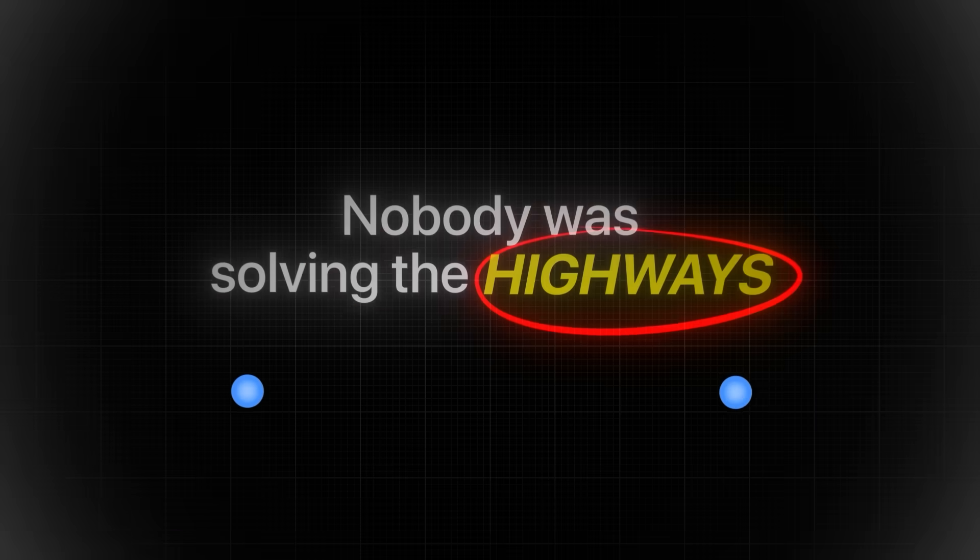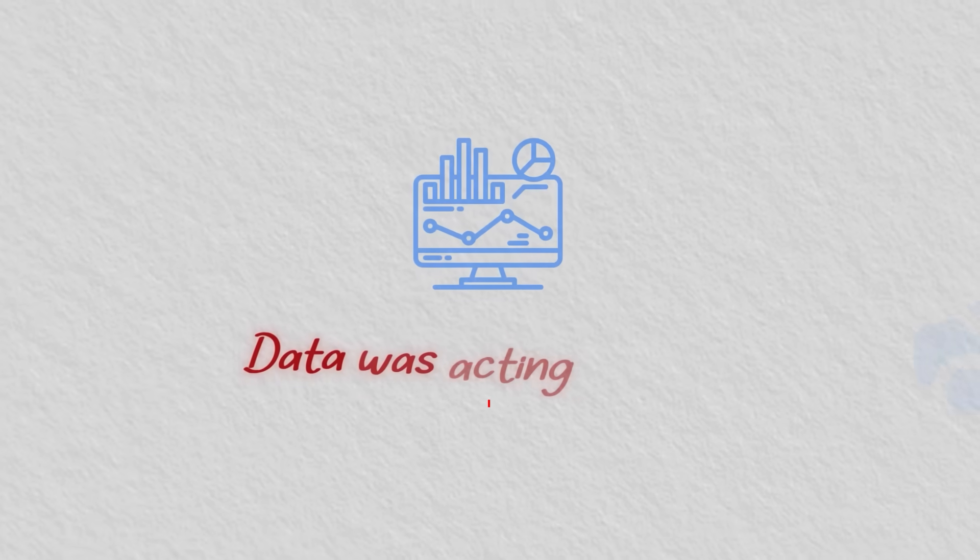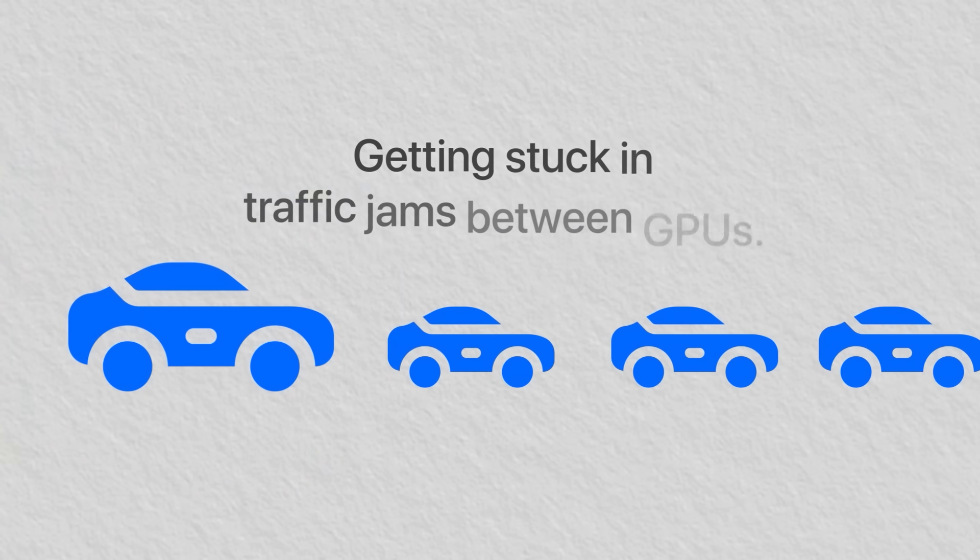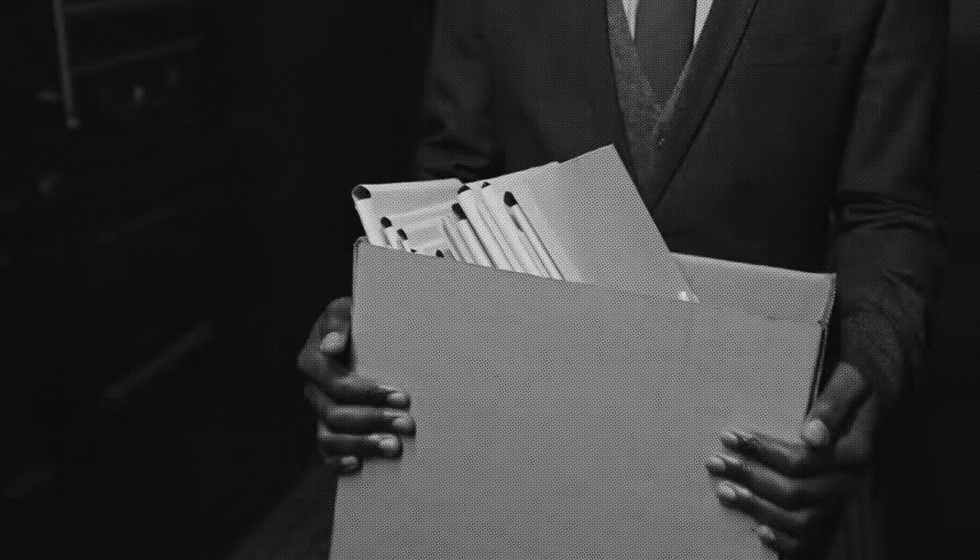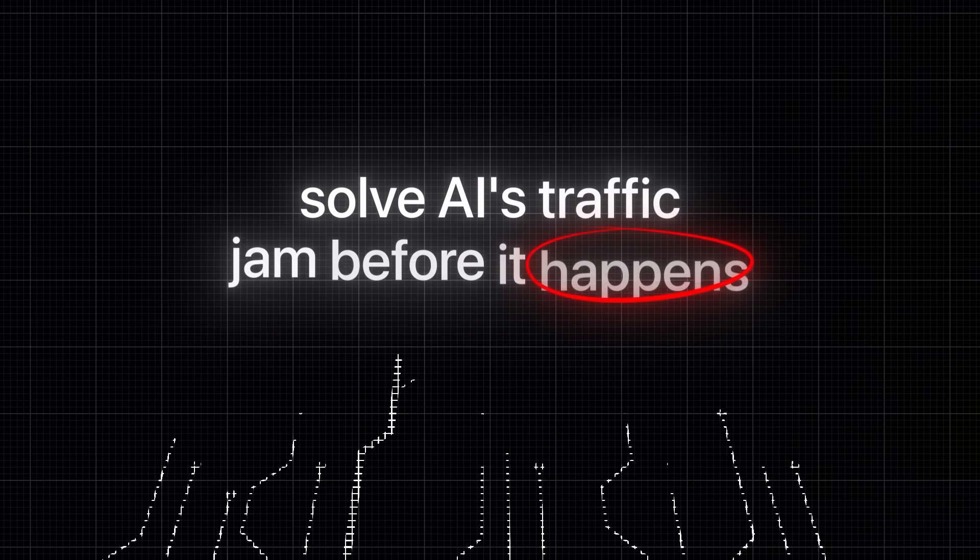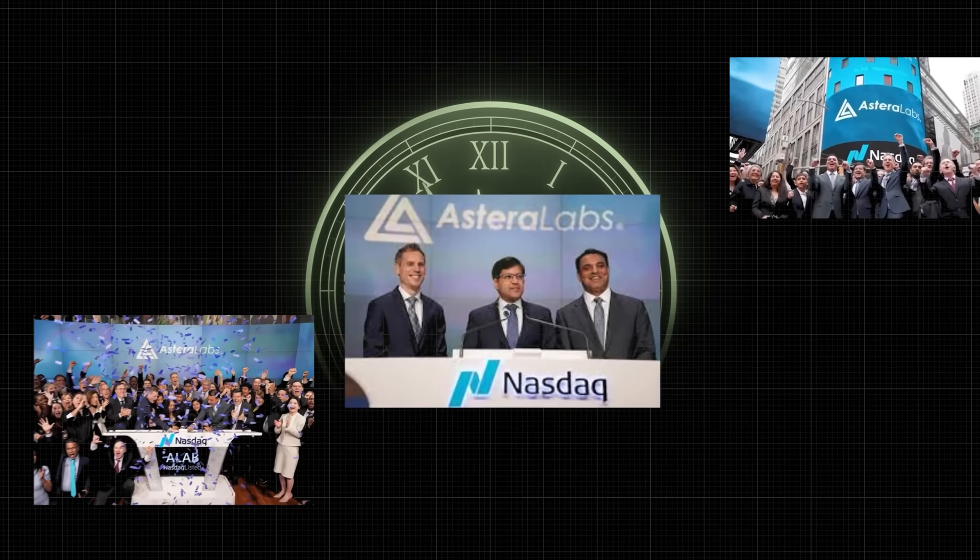But nobody was solving the highways connecting them. Because data was acting just like vehicles, getting stuck in traffic jams between GPUs. So they quit their comfortable six-figure jobs and started Astera Labs in a Santa Clara garage with a singular mission. Solve AI's traffic jam before it happens. And their timing was perfect.